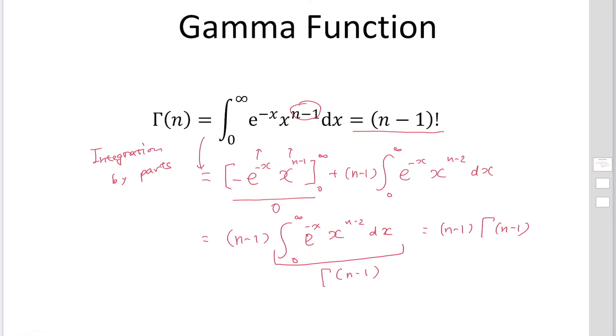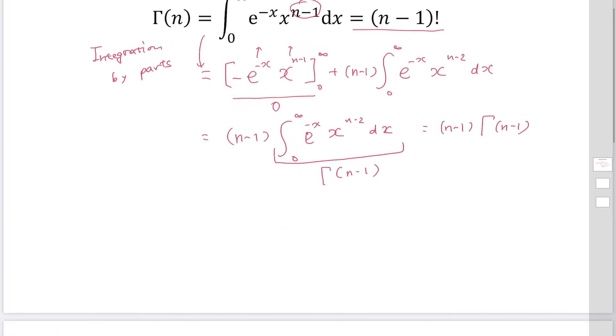So we have a really important formula: gamma n equals n-1 times gamma n-1. We can use this formula repeatedly. So this becomes n-2 times gamma n-2, which is n-3 times gamma n-3, and keep repeating to calculate.